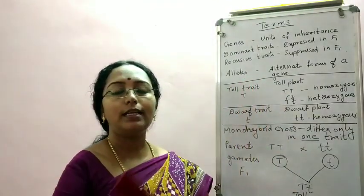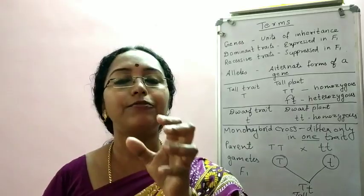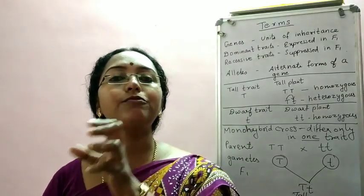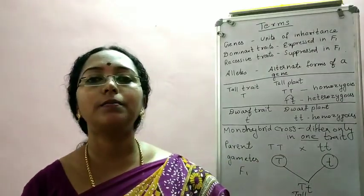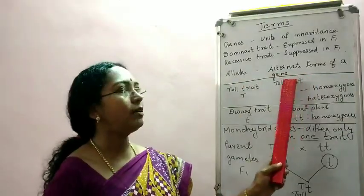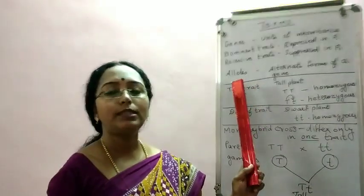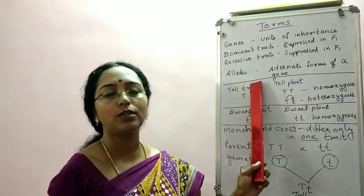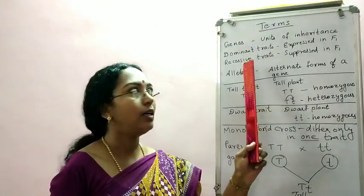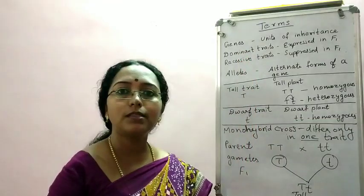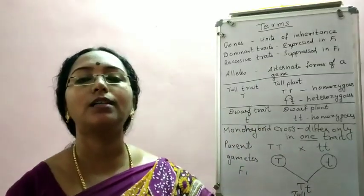There are different forms of character; for each character there is a gene, and for different forms of this character there are different forms of genes. These different forms of genes, or alternate forms of genes, are termed alleles. This is a very important term — we will come across it in the following chapters as well. Gene is responsible for a character; for every gene there are different forms, and those different forms of a gene are termed alleles.